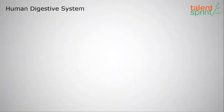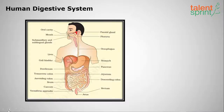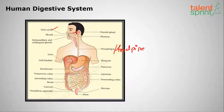Welcome to Talent Sprint. In this series of biology lessons we shall deal with the human digestive system. Food taken through the mouth enters the oral cavity, passes through the pharynx and esophagus (also called the food pipe), then enters the stomach. We also have the liver on the right side, and the pancreas on the left side. From the stomach it enters the small intestine, then the large intestine, and the waste material is excreted out through the anus.